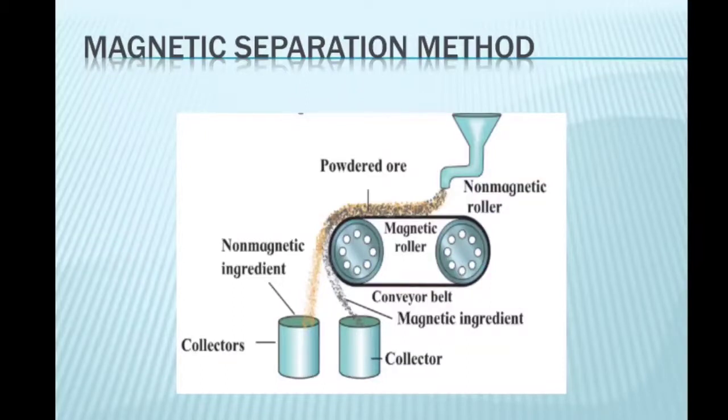In this way, the magnetic and non-magnetic ingredients in the ore can be separated depending on their magnetic nature. For example, cassiterite is a tin ore. It contains mainly the non-magnetic ingredient stannic oxide, that is SnO2, and the magnetic ingredient ferrous tungstate, FeWO4. They are separated by the electromagnetic method.